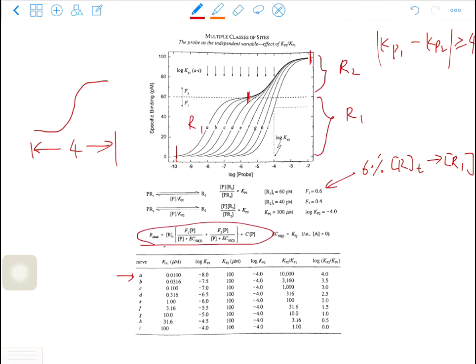Only curve A satisfies this condition. Log KP1 is negative 8 and log KP2 is negative 4. So from curve A to curve I, the difference between KP1 and KP2 decreases. And you can see the two rectangular hyperbola start to overlap on their projections on the x-axis.